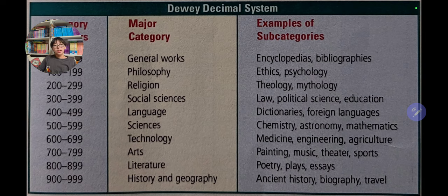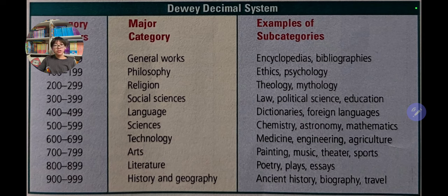The numbers between 600 to 699 represent technology, which includes medicine, engineering, agriculture, and other related subjects. From 700 to 799 are the arts, which include paintings, music, theater, and sports.